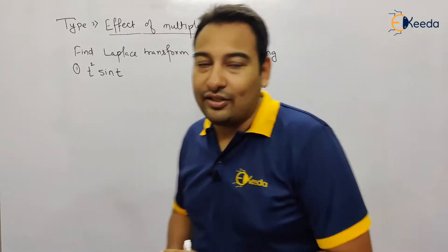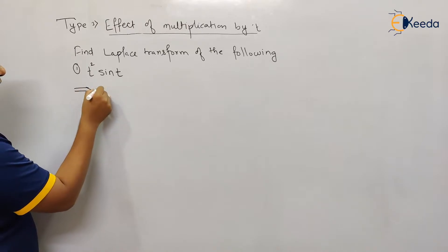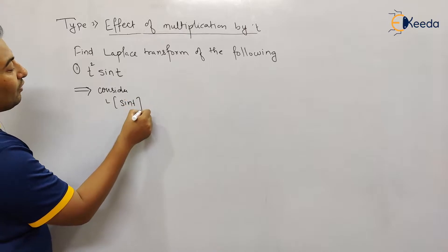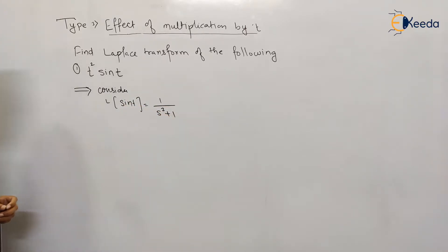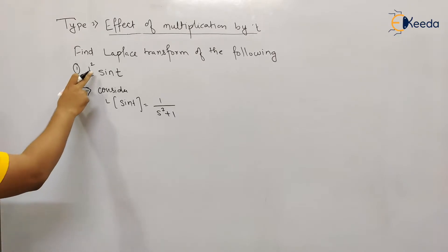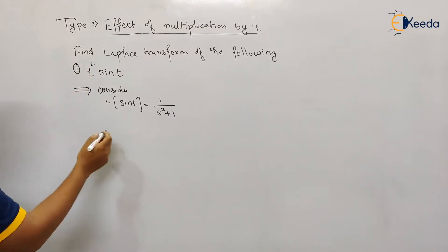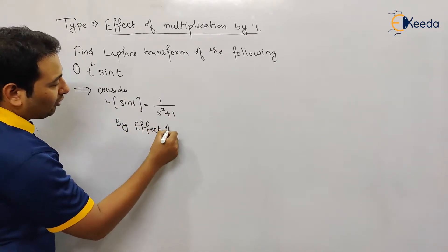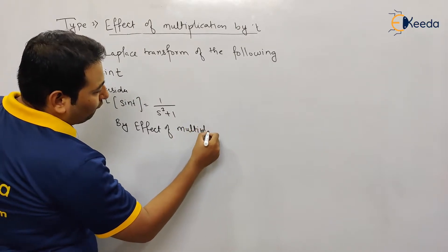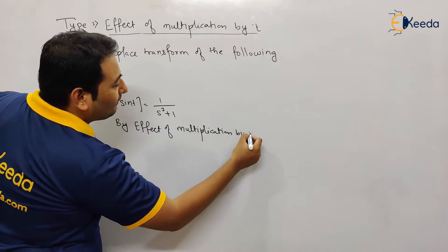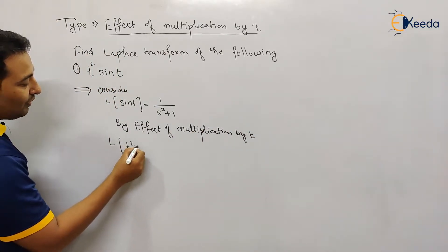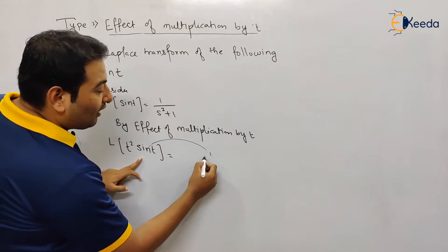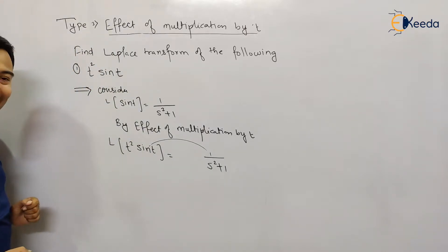We'll be left with sin(t). So let's start — consider Laplace of sin(t), and what is Laplace of sin(t)? It is 1 upon s squared plus 1. Now we're going to consider the effect of multiplication by t: Laplace of t squared sin(t).